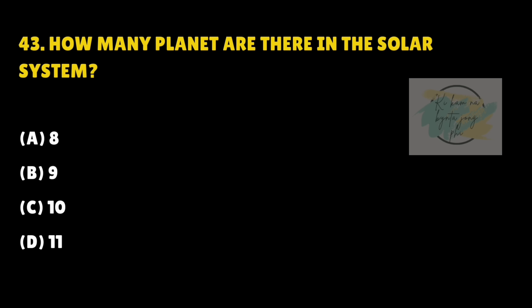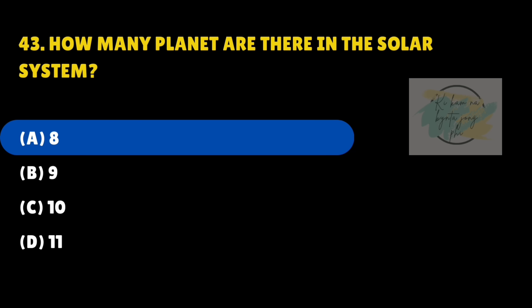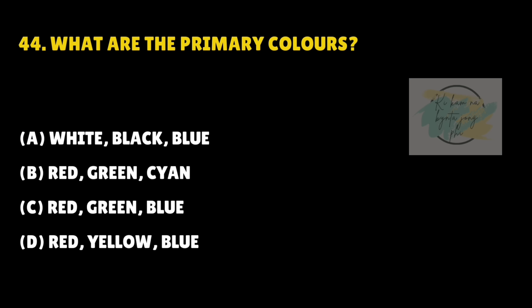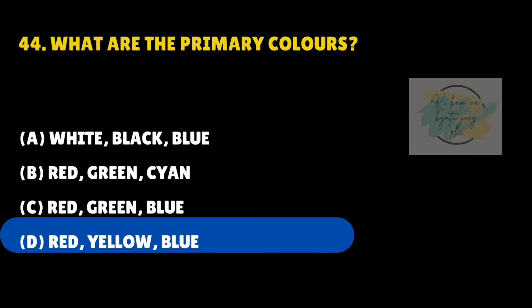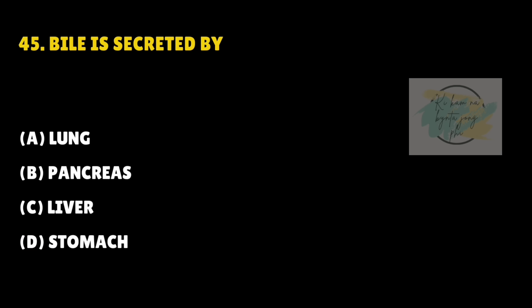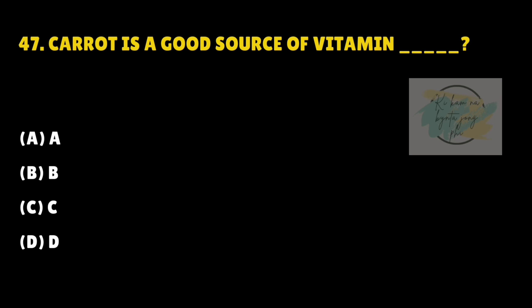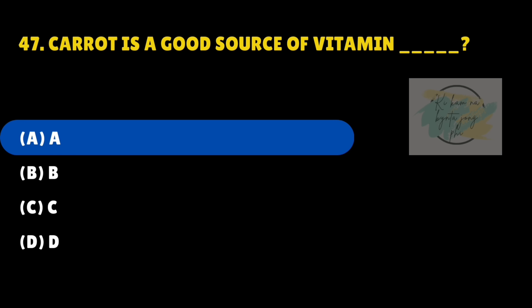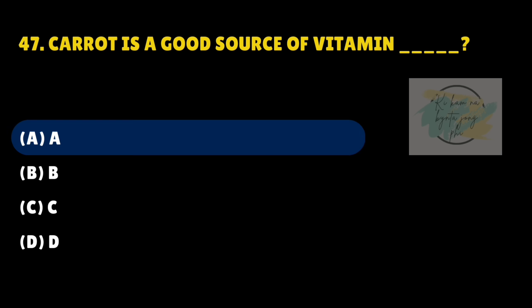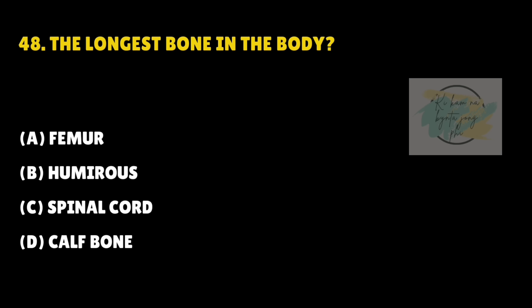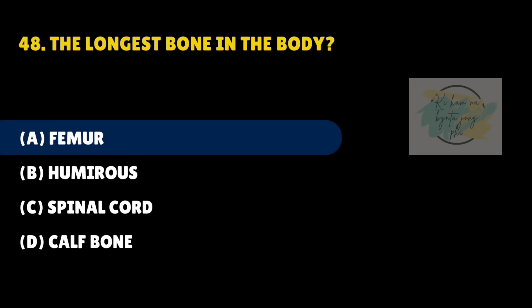How many planets are there in the solar system? What are the primary colours? Answer is D — Red, Yellow, Blue. Bile is secreted by — answer is C — Liver. Carrot is a good source of Vitamin — answer is A — Vitamin A. The longest bone in the body is — A — Femur.